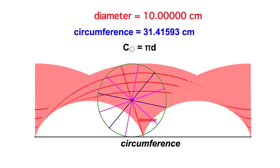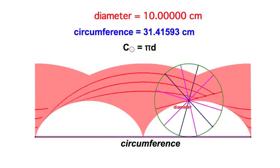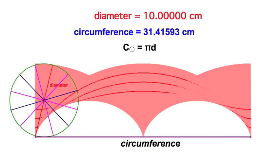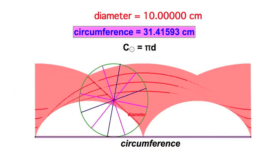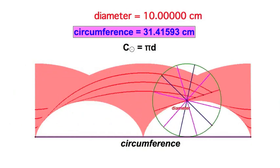So this distance here, a linear measurement, is actually equal to the circumference, and I measured it with Sketchpad, and you can see this is looking very, very familiar.